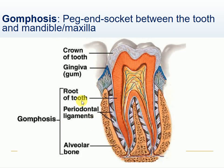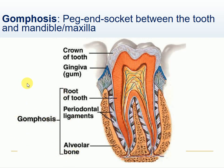Another example of a fibrous joint is gomphosis — a peg-and-socket joint between the tooth and the mandible or maxilla. The tooth root fits into the jawbone; fibres connect the tooth to the mandible or maxilla. The structure includes the root of the tooth, the periodontal ligament, and the alveolar bone. Together these make up a structure called a gomphosis, also including the gingiva and crown of the tooth.